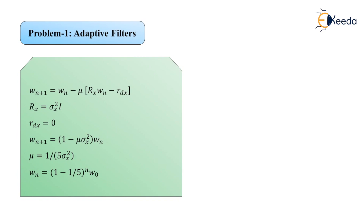The answer to the question of whether the steepest descent method converges to the solution found in Part A is yes. This way we have the solution to both Parts A and B of problem number 1, based on the design of the Wiener filter using Wiener-Hopf equations and the steepest descent algorithm for designing an FIR-type filter. By the next lecture, we shall continue with the same chapter on adaptive filters to practice another problem titled problem 2, adaptive filters. Thank you.